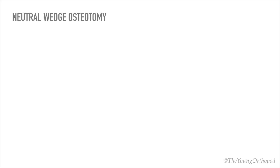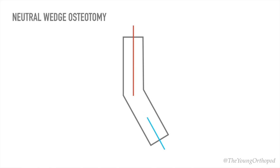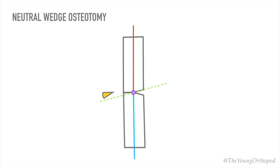The CORA that lies between the convex and concave cortices on the transverse bisector line is called the neutral wedge CORA. If the osteotomy and the ACA pass through this point, a partial opening and partial closing wedge correction results — half a wedge is removed and half a wedge is opened. The neutral wedge osteotomy has no effect on bone length.